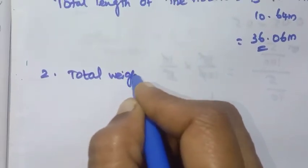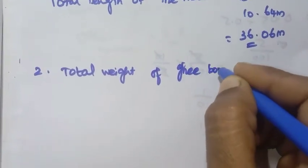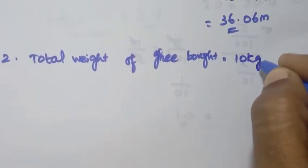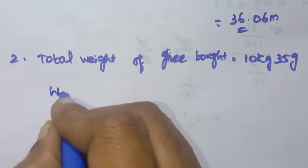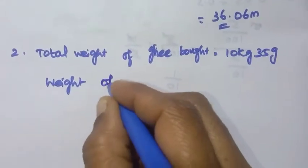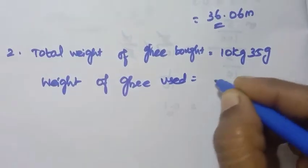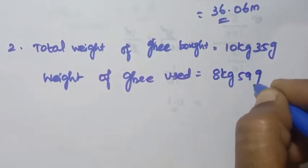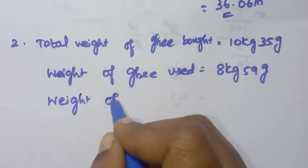Second question: Weight of ghee bought is equal to 10 kilograms 35 grams, which is 10.35 kg. Weight of ghee used is 8 kilograms 59 grams, which is 8.59 kg. So we need to find the weight of the remaining ghee.